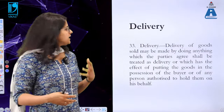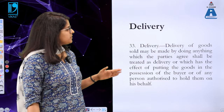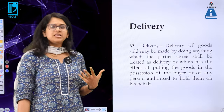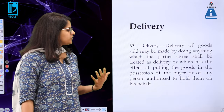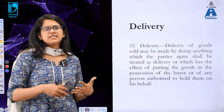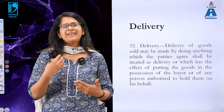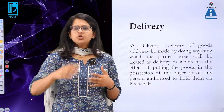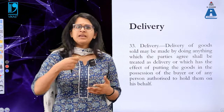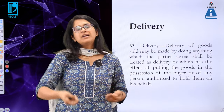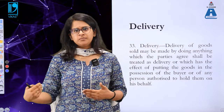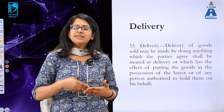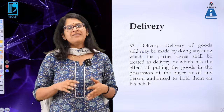What is delivery? Section 33 defines it: delivery of goods sold may be made by doing anything which the parties agree shall be treated as delivery, or which has the effect of putting the goods in the possession of the buyer or of any person authorized to hold them on his behalf. For example, if you go to an electronics showroom, choose a TV, make the payment, and send your servant to collect it — the seller makes delivery to that authorized person, which amounts to valid delivery.